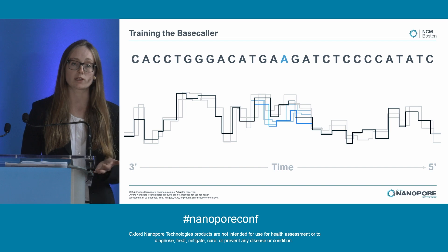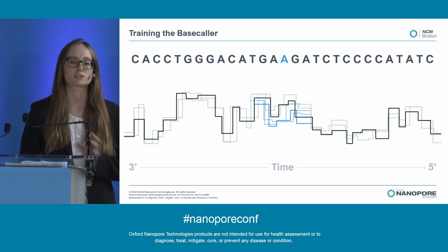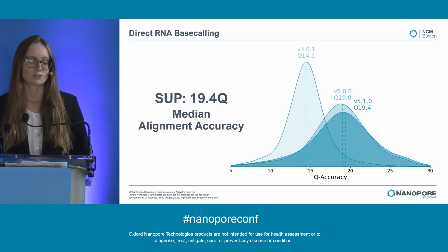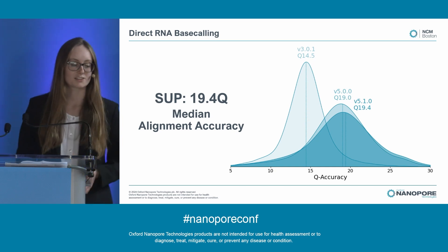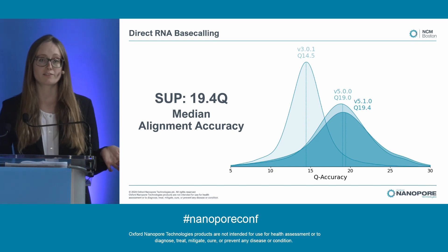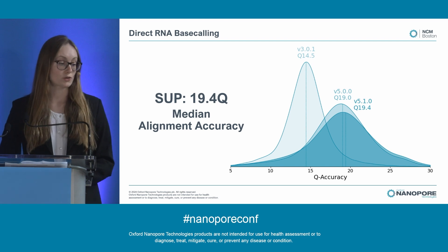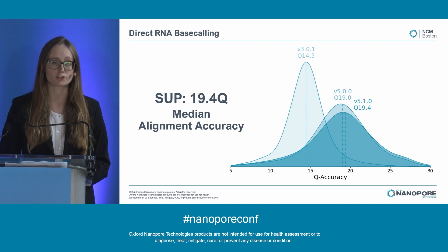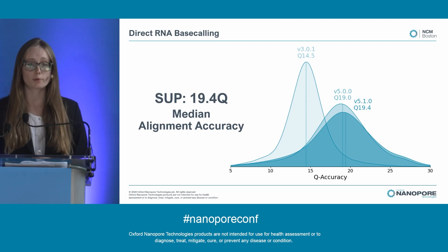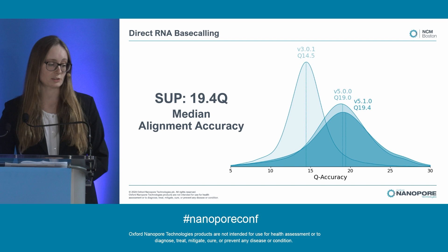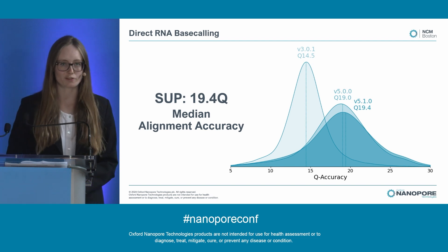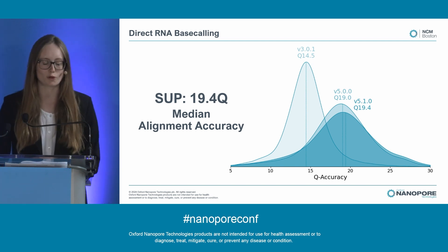For example, if we were calling an m6A, this means the base caller would still call it as an A, even though it's modified. So this is what we have done with our base caller. Yesterday, we announced the release of our V5.1 direct RNA base caller, which achieves 19.4Q accuracy on universal human reference RNA. This is a transformer which benefits from the same speed improvements mentioned earlier. And really excitingly, we've trained it on more mods than before, which means we can do extra mod calling.